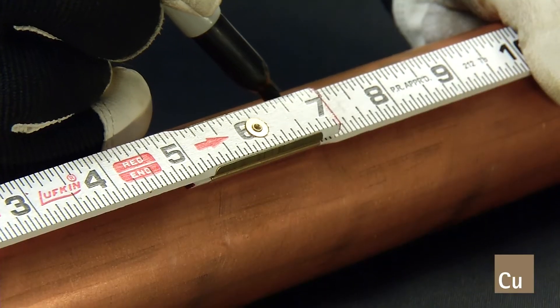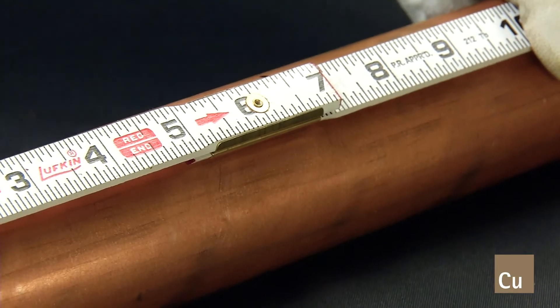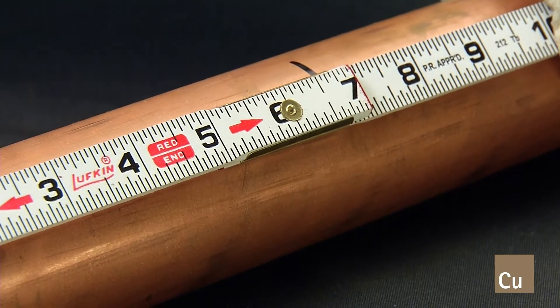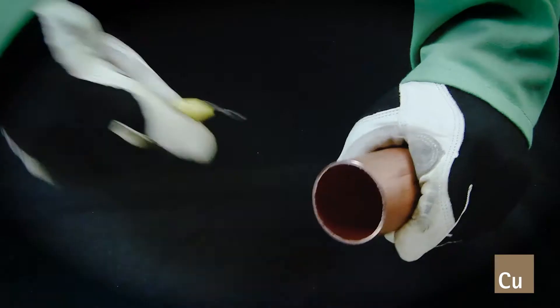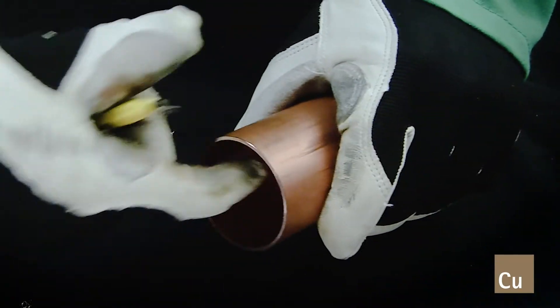So let's get started. First, the tube must be measured so that it can be inserted completely into the back of the flange socket. Cut the tube square at the desired length. Ream and deburr the inside edge of the tube and chamfer the outside edge.